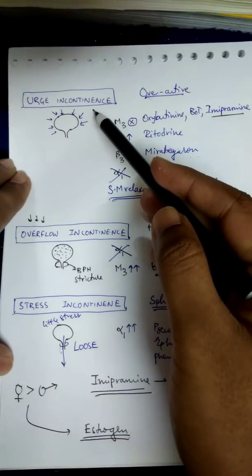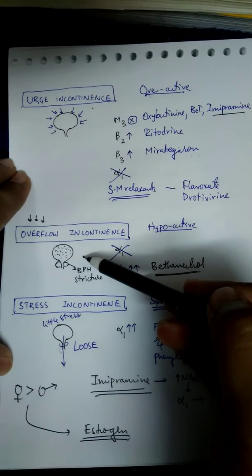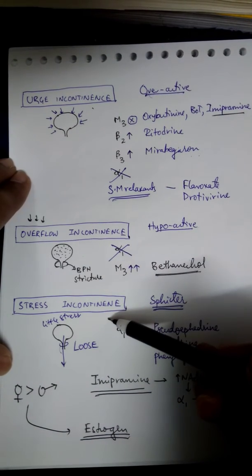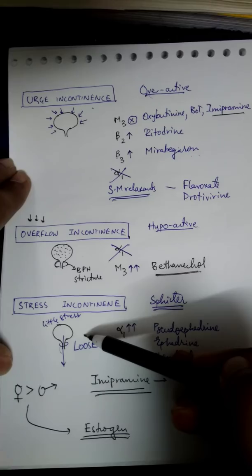To sum up: in urge incontinence, patient urinates more times a day with little urine. In overflow incontinence, patient urinates less times a day but too much urine per urination. In stress incontinence, the patient urinates on application of stress.